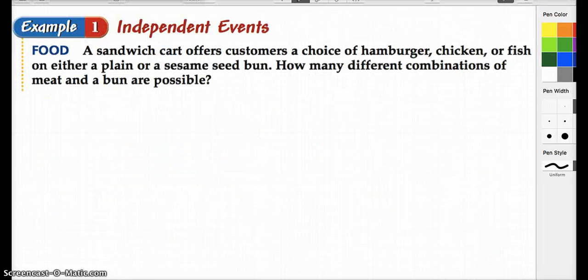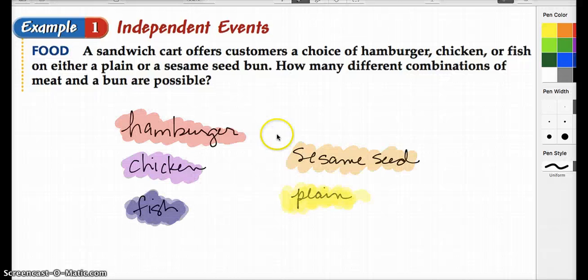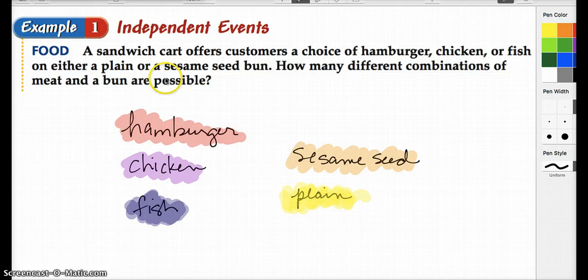Here in example one, a sandwich shop offers customers a choice of a hamburger, chicken, or fish, either on a plain or a sesame seed bun. How many different combinations of meat and bun are there? And we pretty much get this. So just like we talked about before, there's three choices and two choices, which is going to give us six possibilities. And those possibilities come from really just counting it out, right?